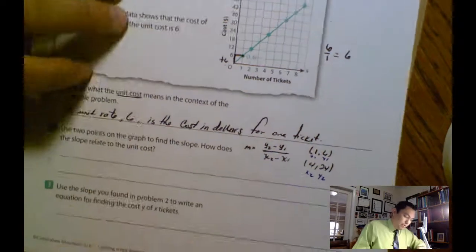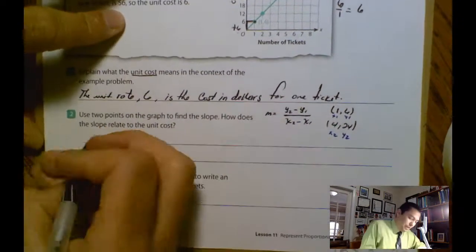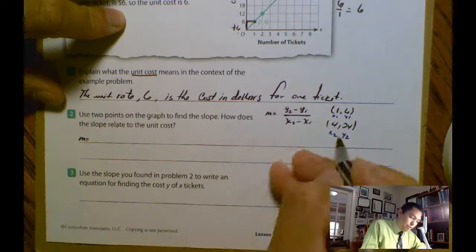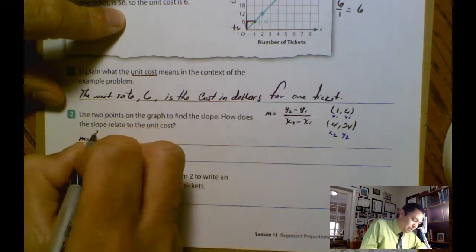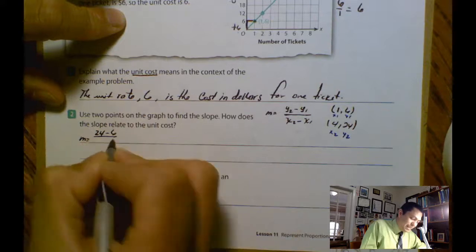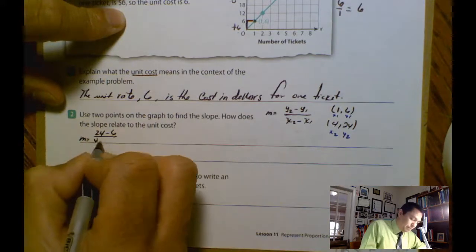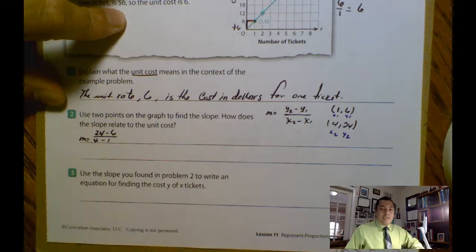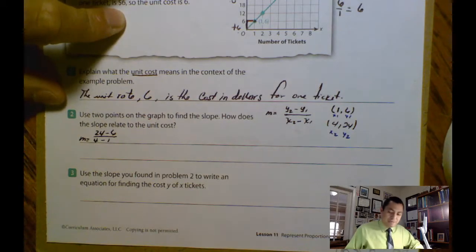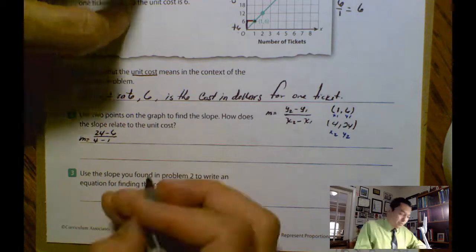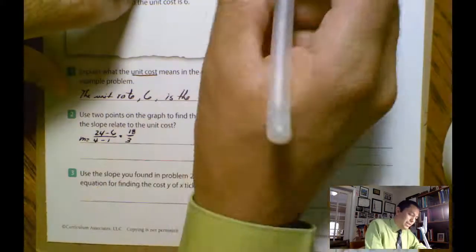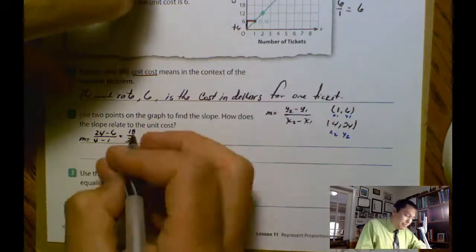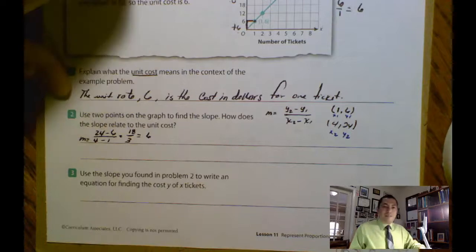And I'm going to use the formula. Here, m is equal to y2 minus y1. So it's 24 minus 6. And then the denominator will be 4 minus 1. So in this case, what we're going to have, if you do 24 minus 6 equals 18 divided by 3. See, if we divide, equals 6. That's the slope.